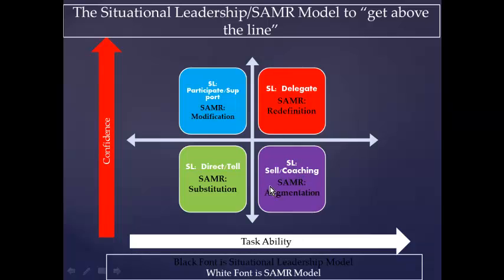The next level up is where task ability is quite high but confidence is low. You need to sell them on why they should be doing it, what they'll get out of it, how it links to their real-world relevance and why it's important for lifelong learning. Coach them to understand what's holding them back and help build their confidence. This corresponds to augmentation — you're still holding their hand, saying, 'I want you to do this and go here,' to build their confidence in using technology.